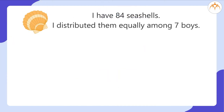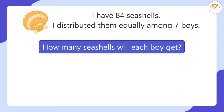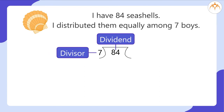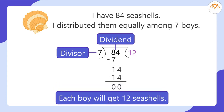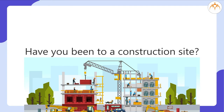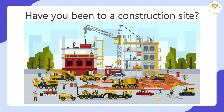I have 84 sea shells and I distributed them equally among 7 boys. How many sea shells will each boy get? 84 is the dividend and 7 is the divisor, so 84 divided by 7 is equal to 12. Each boy will get 12 sea shells.